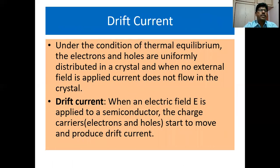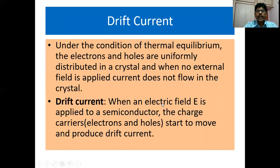Next we shall see what is drift current. Under the condition of thermal equilibrium, the electrons and holes are uniformly distributed in a crystal. When no external field is applied, current does not flow in the crystal. When an electric field E is applied to a semiconductor, the charge carriers, that is electrons and holes, start to move and produce drift current.